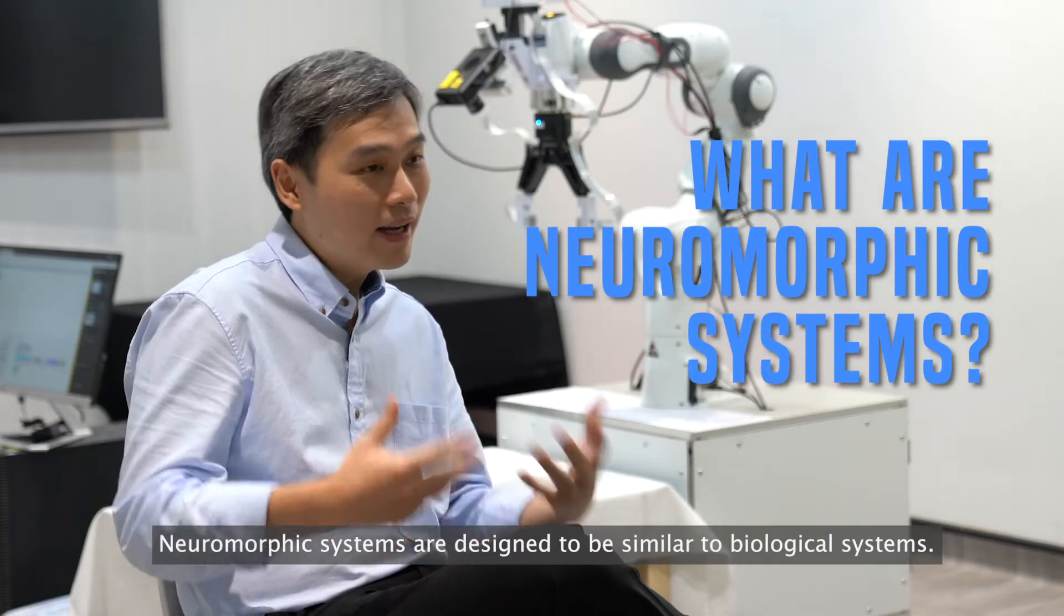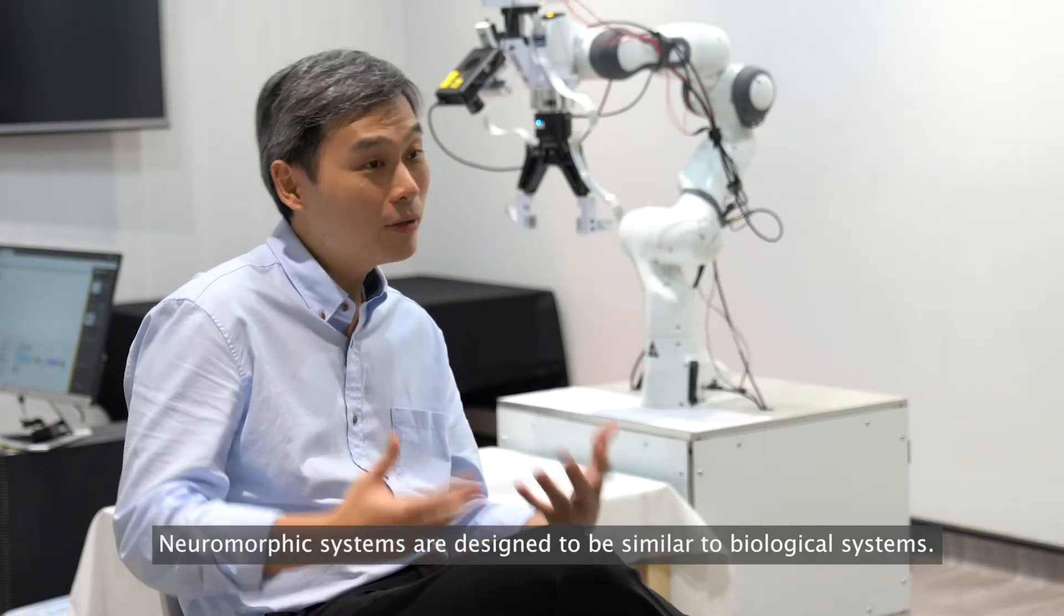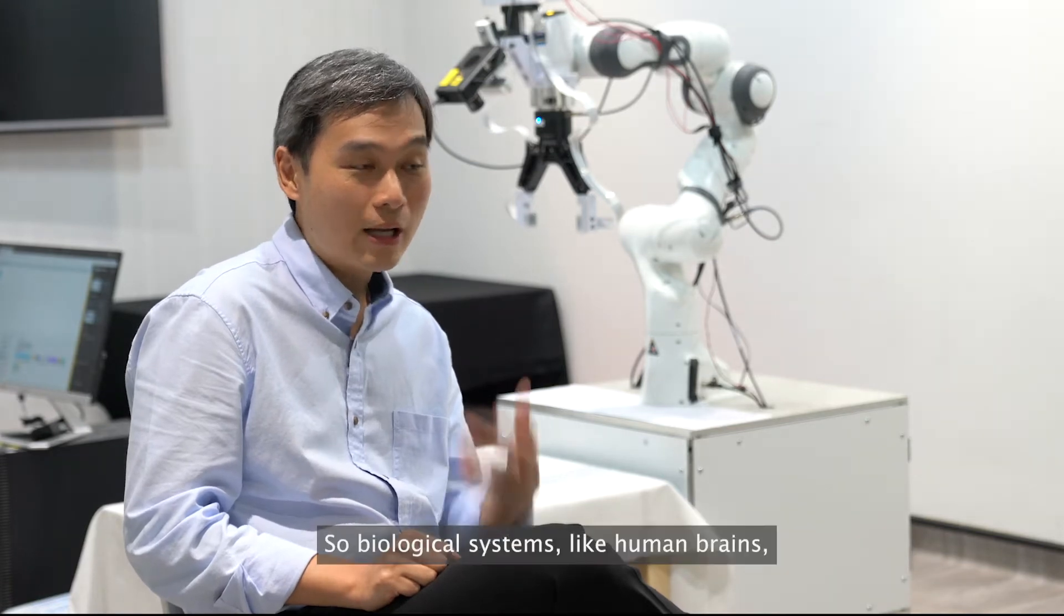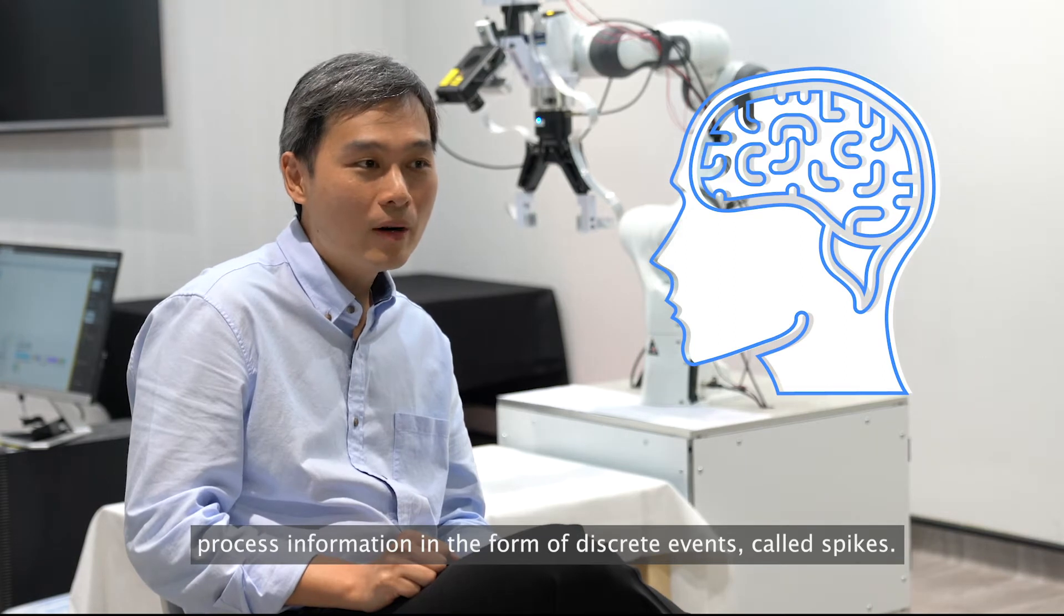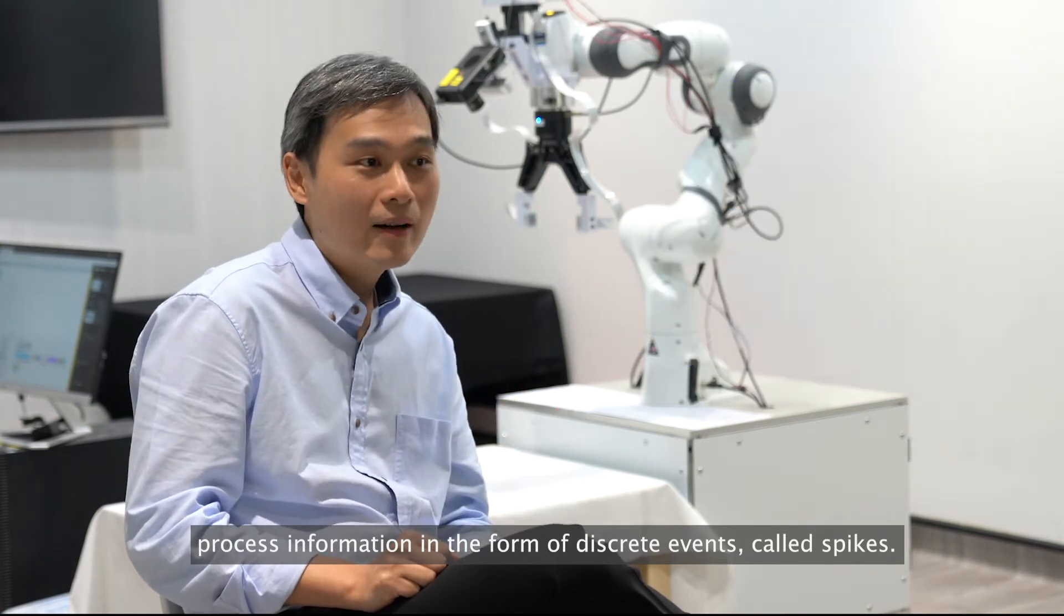Neuromorphic systems are designed to be similar to biological systems. Biological systems like human brains process information in the form of discrete events called spikes.